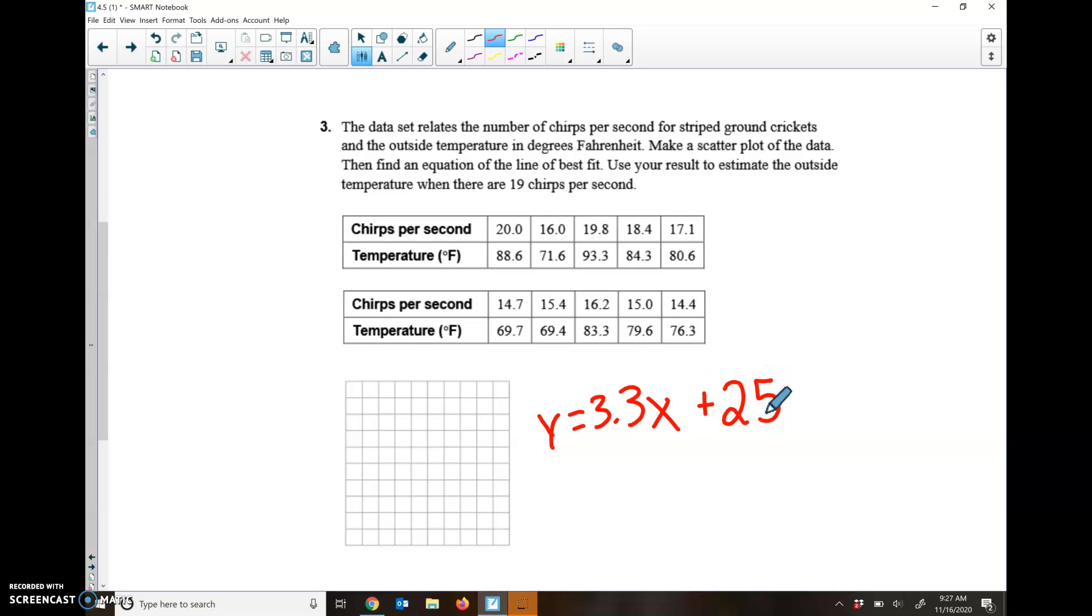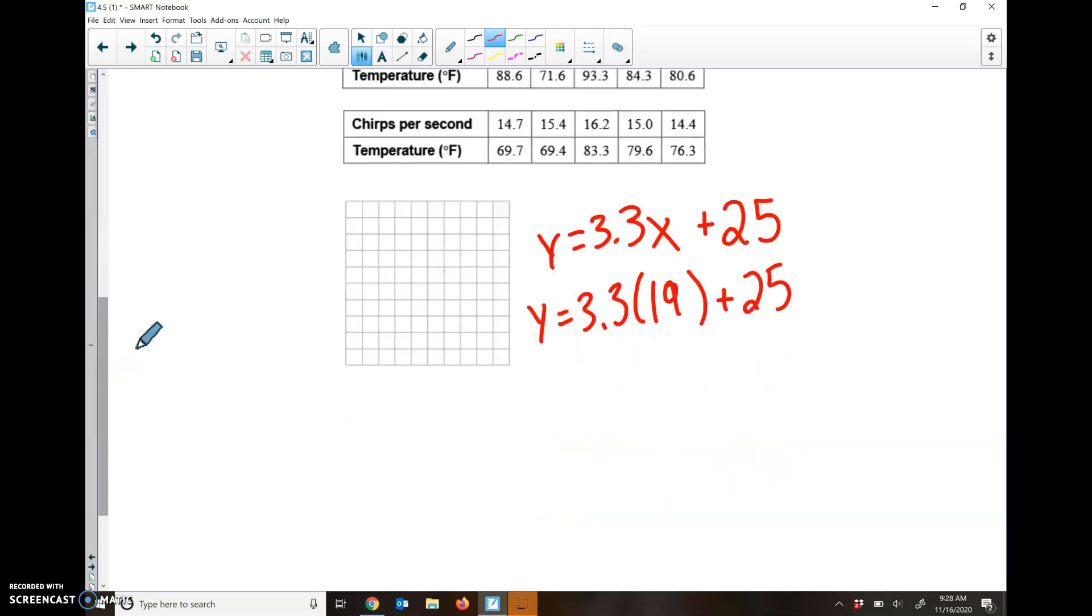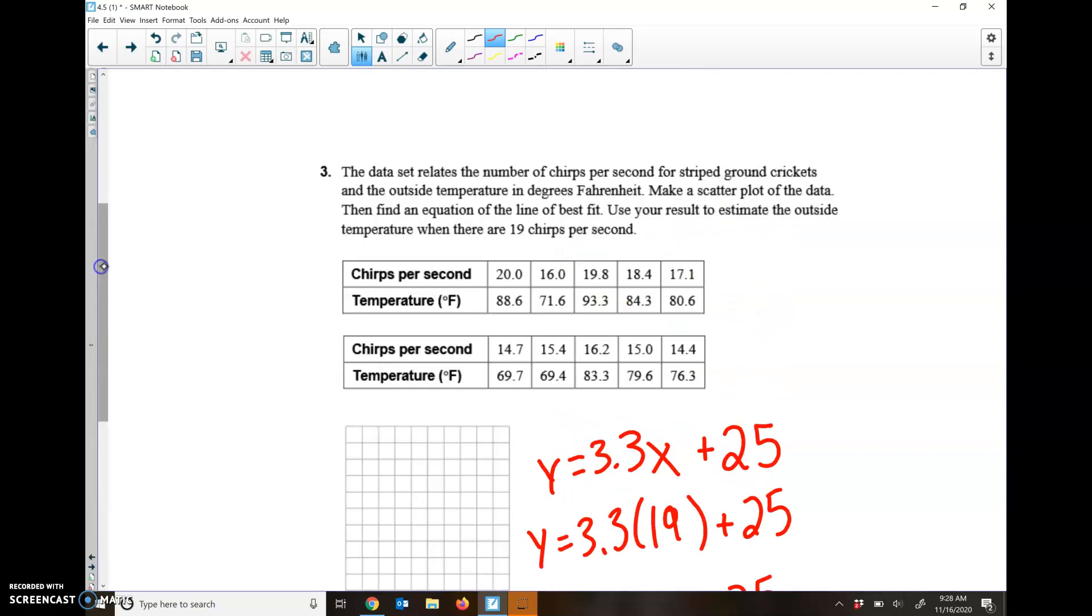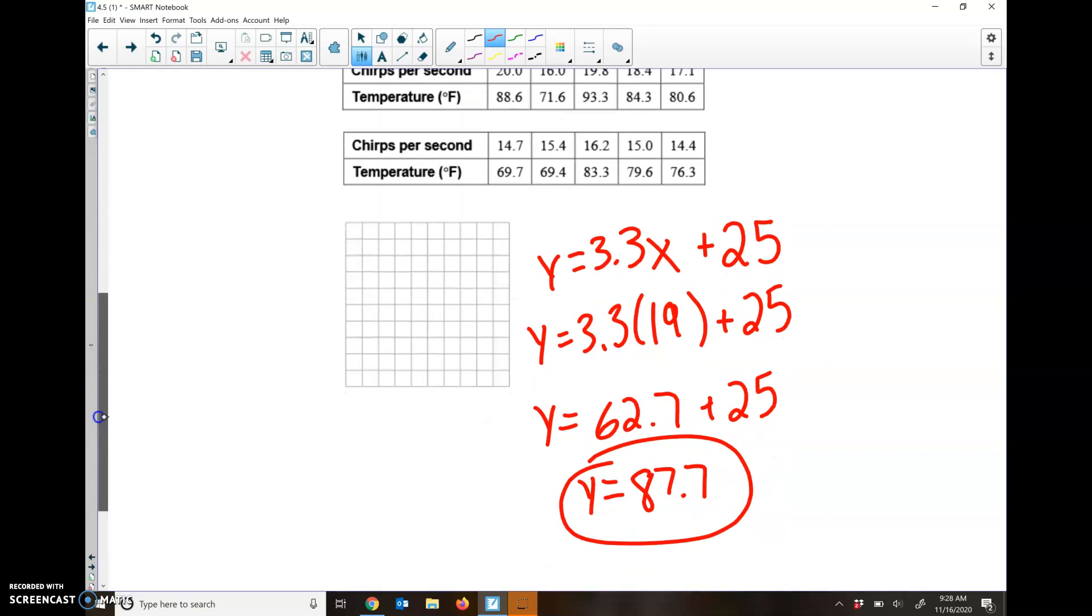That means as long as the temperature was 25 degrees, you can kind of put that in there. If we wanted to figure out how many chirps there are for 19 per second, what the temperature would be, I'm going to put 19 in for my X. 3.3 times 19 plus 25 is 62.7 plus 25, that's going to equal 87.7 degrees. If you hear this kind of cricket chirping 19 times in a minute, that means it's about 87.7 degrees outside.